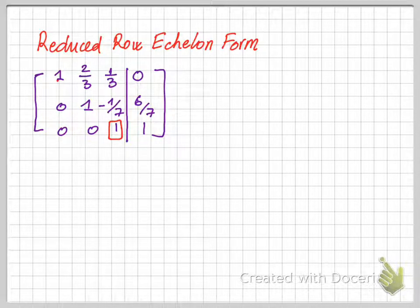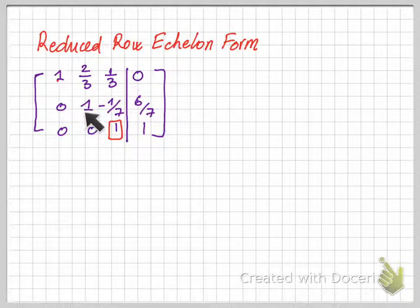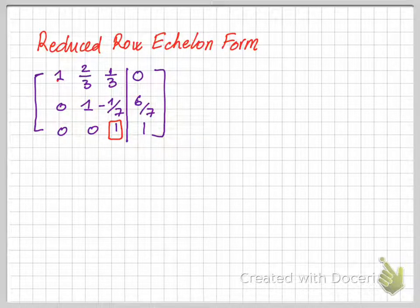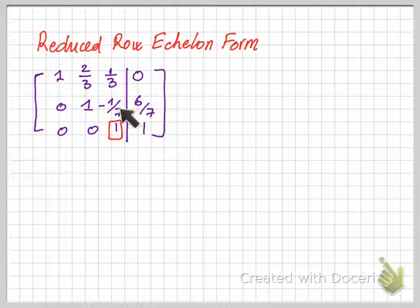To start this process, we need to begin at the bottom right pivot positions. This matrix has three pivot positions: one here, another here, and another here. We need to start with the bottom right pivot position and look at the column that it belongs to.